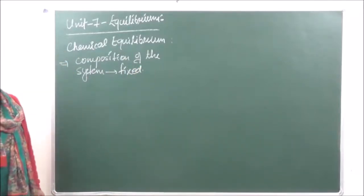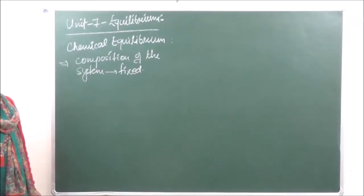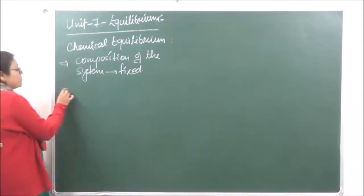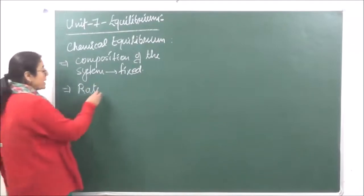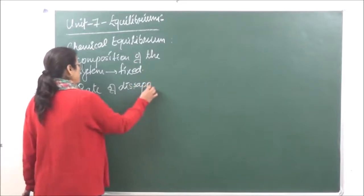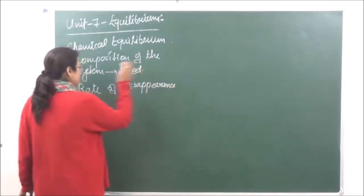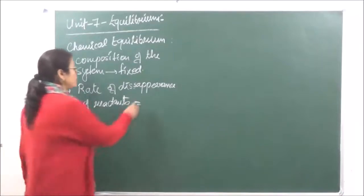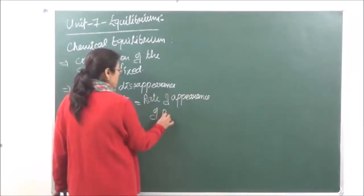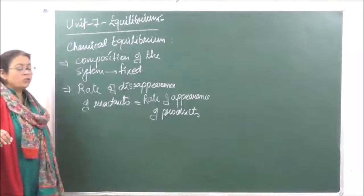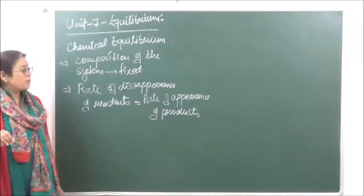At equilibrium, no change can be seen. Both the forward and backward reactions move with equal speeds. As a result, the rate of disappearance of reactants becomes exactly equal to the rate of appearance of products. And in the reaction mixture, both reactants and products are going to be present.